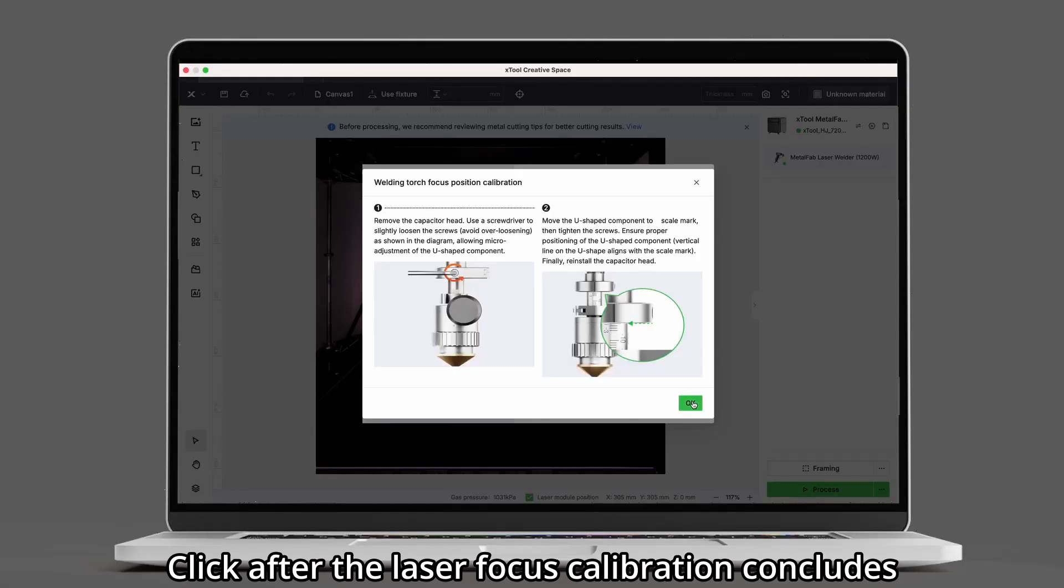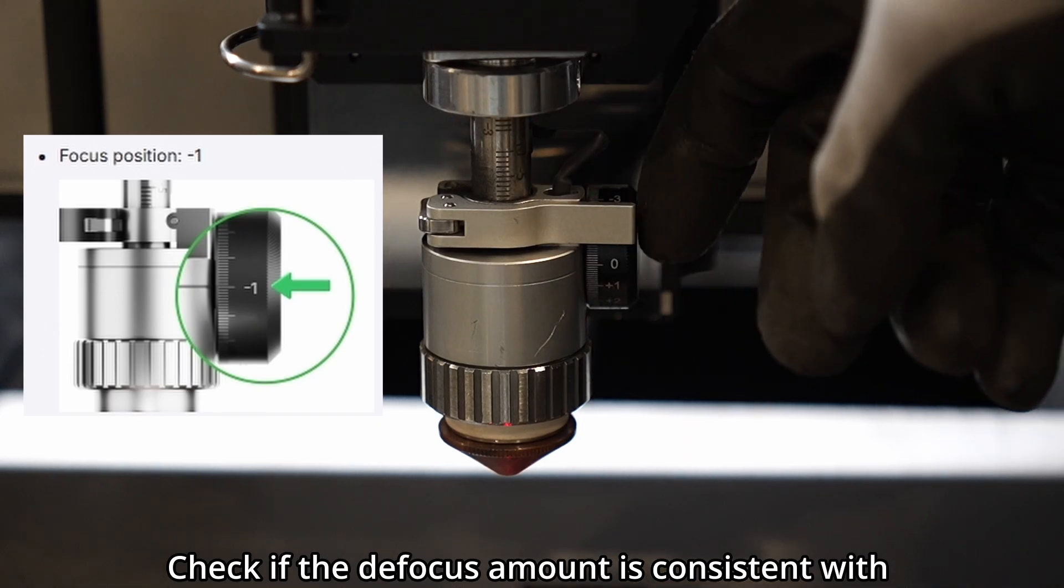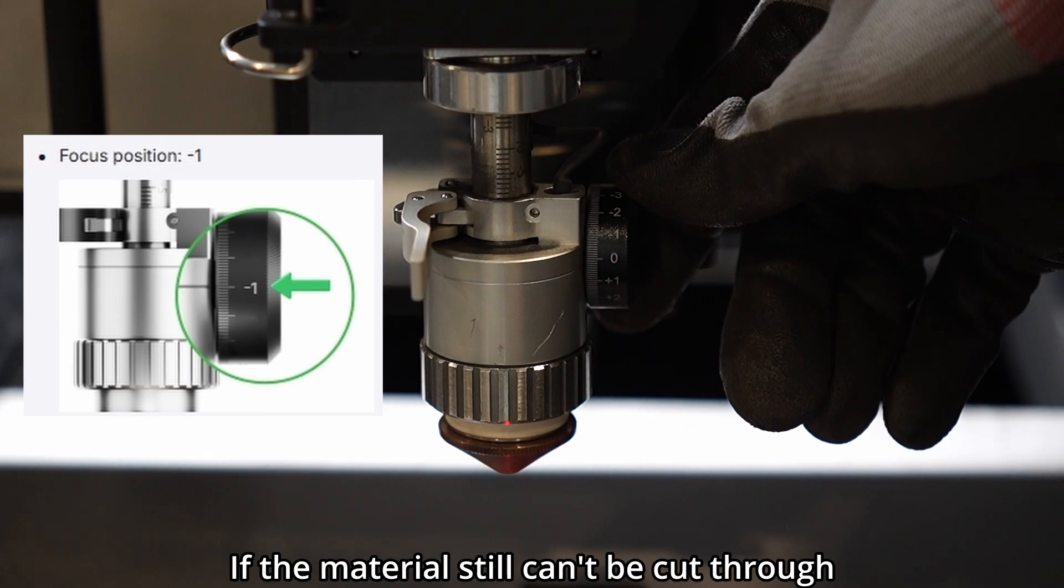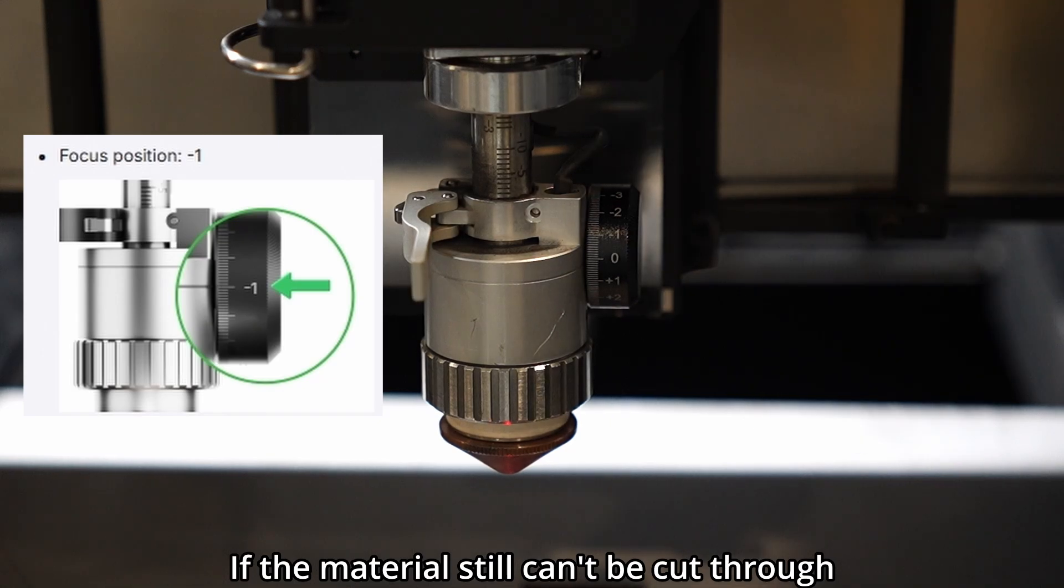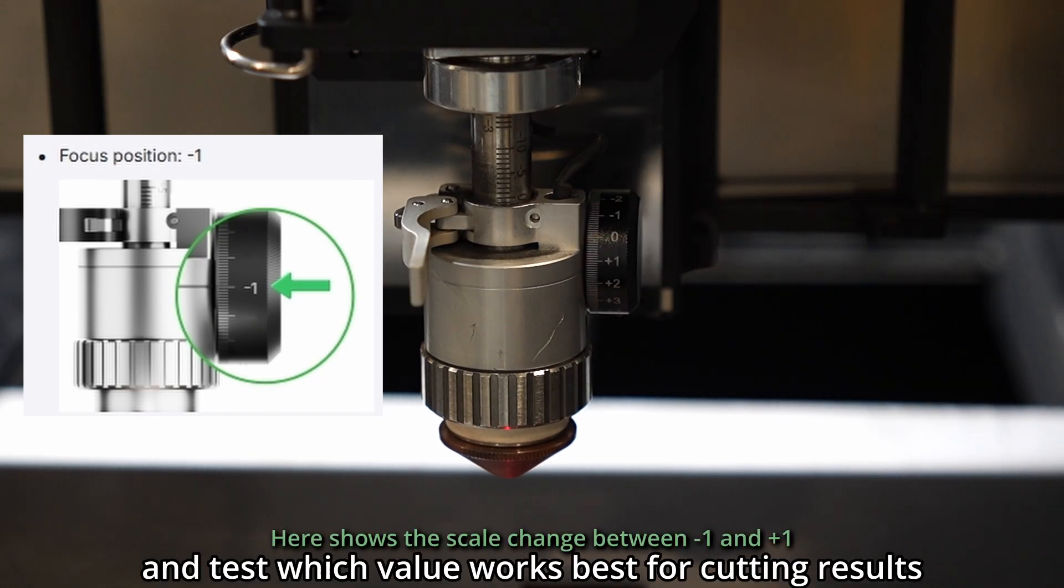After the laser focus calibration concludes, check if the defocus amount is consistent with that in X-Tool software. If the material still can't be cut through, turn the knob slightly and test which value works best for cutting results.